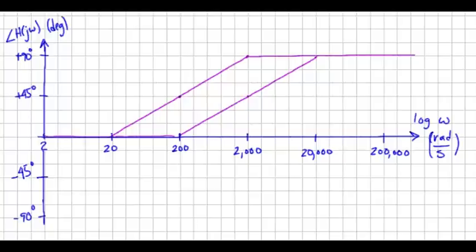Poles give a total contribution of minus 90 degrees. So the pole centered at 20 gives us a minus 45 shift, decade above we're at minus 90, and constant 90 after that. The other pole is at 20,000 radians per second. So there's the minus 45, decade above, decade below.